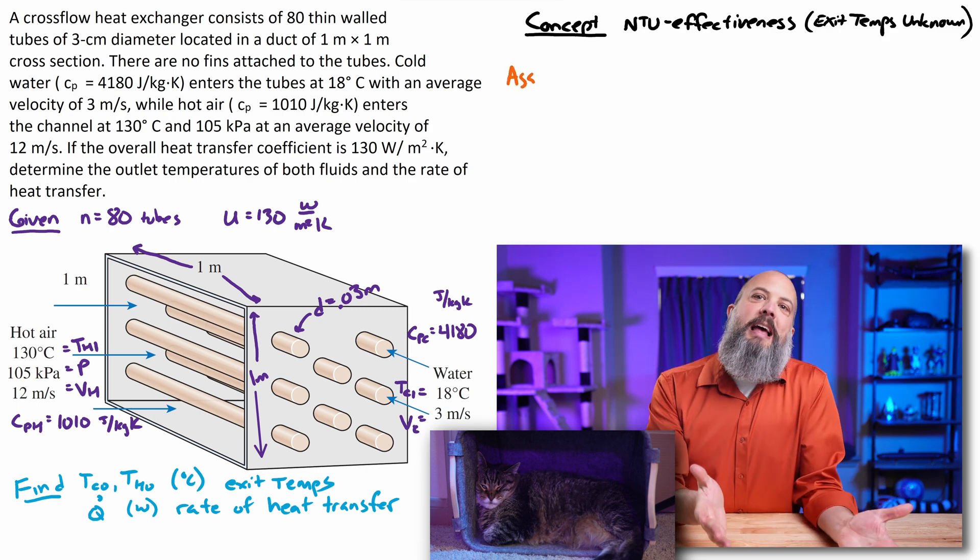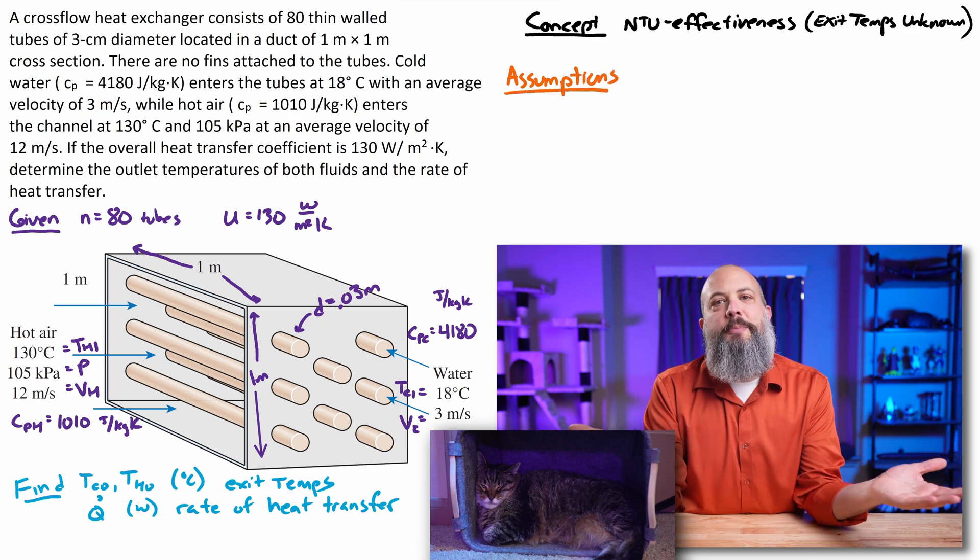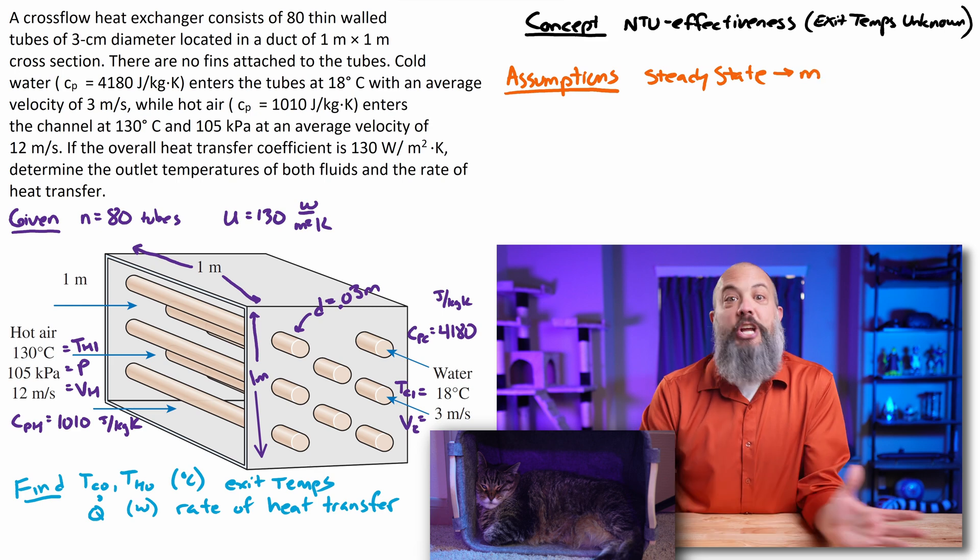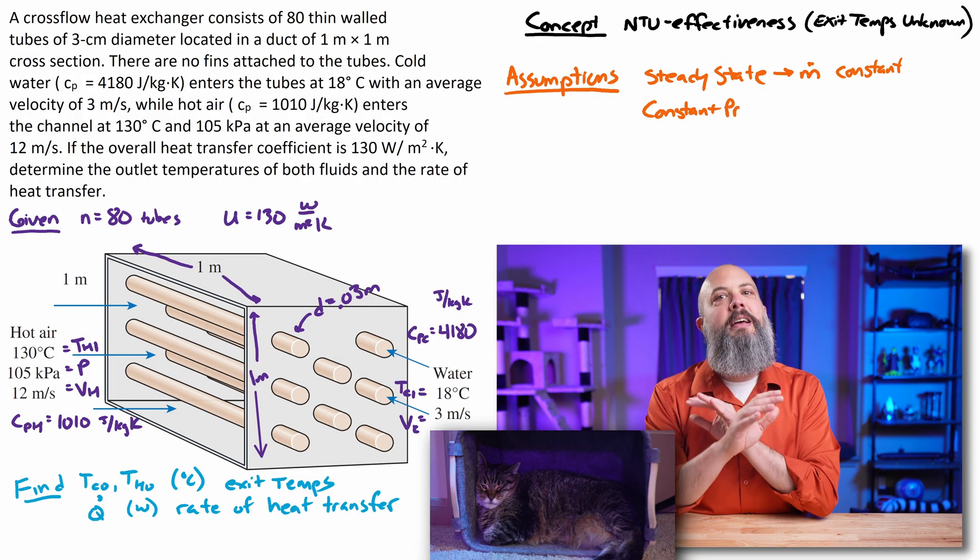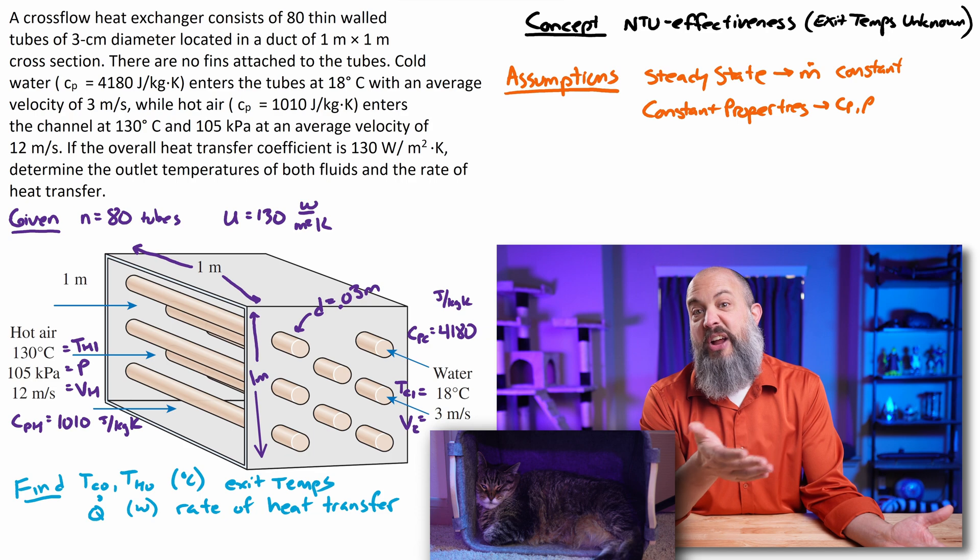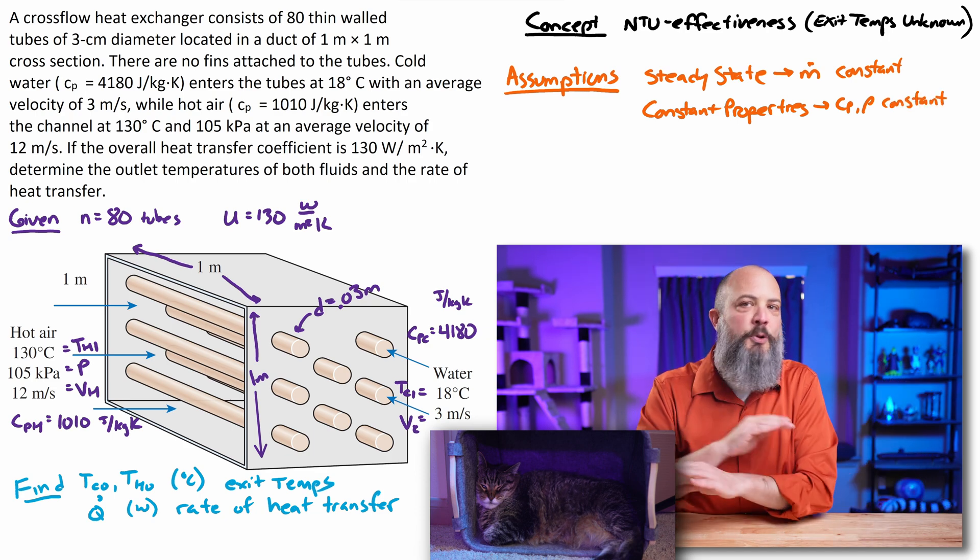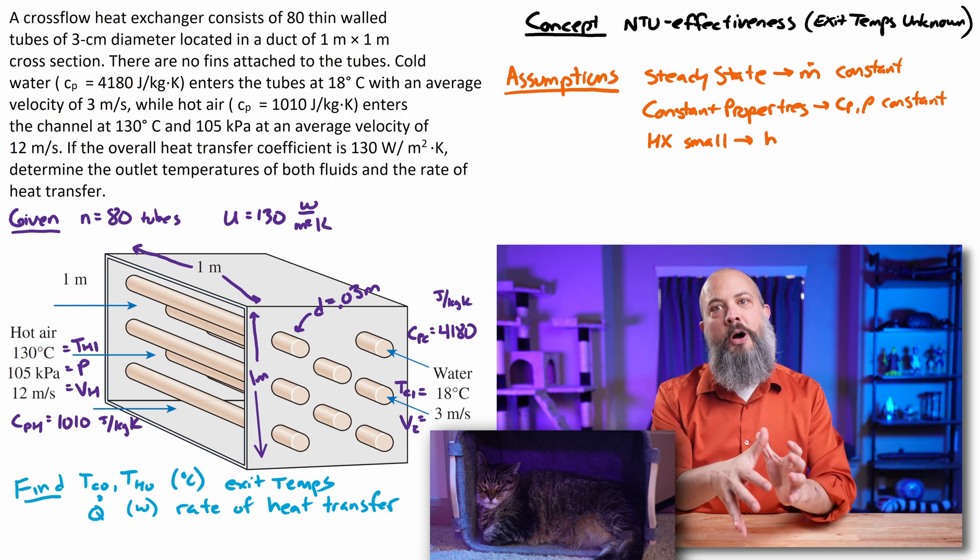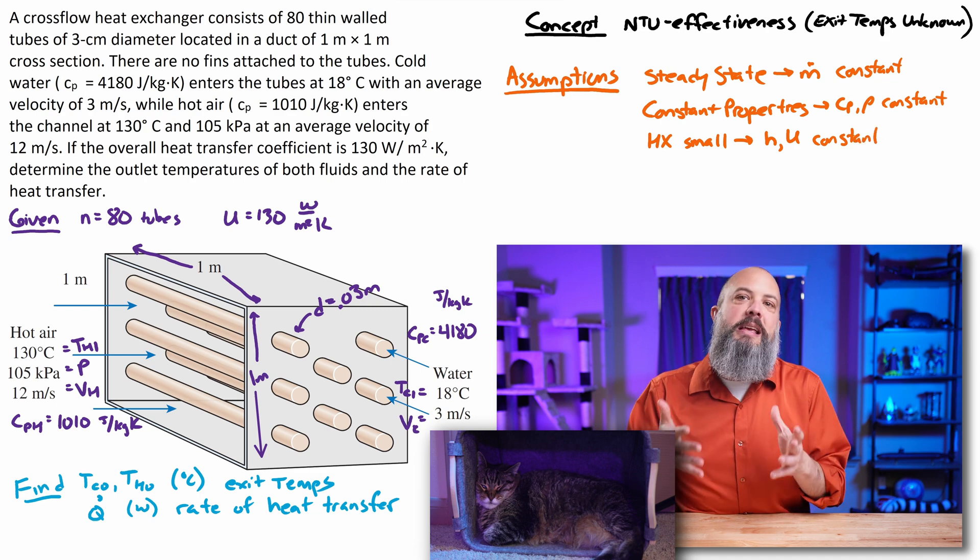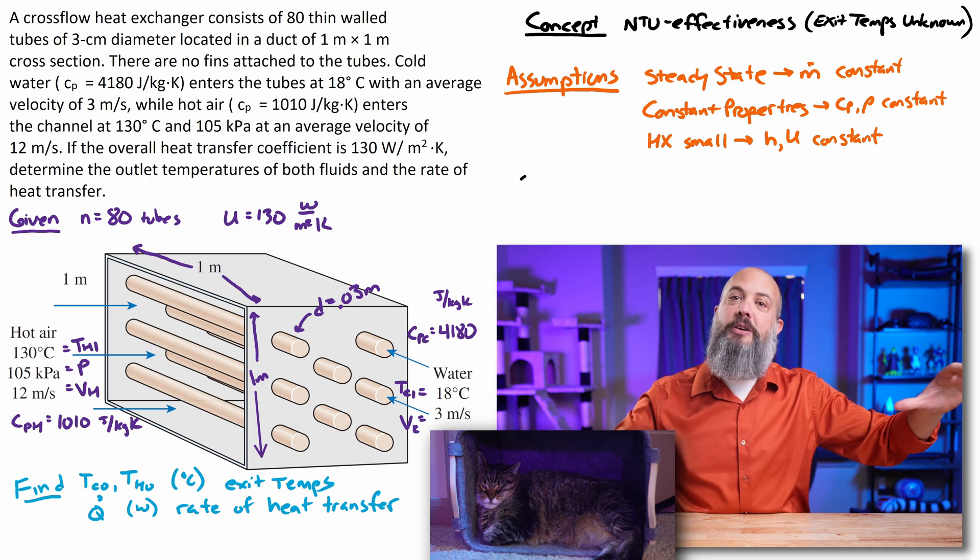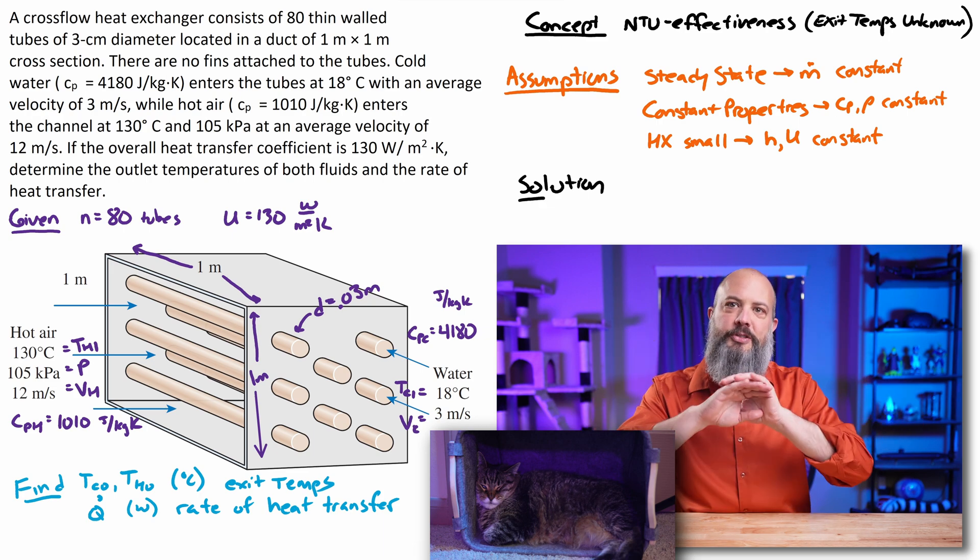Heat transfer problems always have assumptions. We're going to assume steady state so our mass flow rates are constant. Assume constant properties so that our CP value is constant. Normally specific heat would change as temperature changes. And this is a heat exchanger. Heat is being exchanged. Temperatures are changing. CP should be changing, but that will make the problem way more complicated. So we'll assume a constant value for CP. Also density in this case for air, because as temperature changes, density should also be changing. We'll assume a constant value for that. And we're also going to assume whenever we use the effectiveness NTU method that the heat exchanger is kind of small, which is going to allow H and U to be constant. If the heat exchanger were really big, then the heat transfer coefficient would actually probably be different in different parts of the heat exchanger. So assume that it's small so that those values can be constant also.